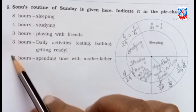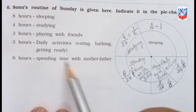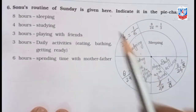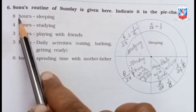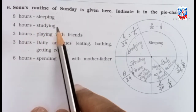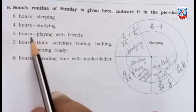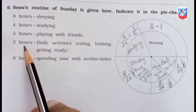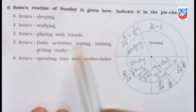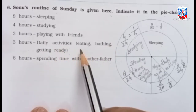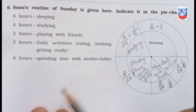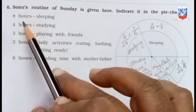This is the Sunday routine of Sonu. We have to show this in the pie chart. He gives 8 hours for sleeping, 4 hours studying, 3 hours playing with friends, 3 hours for daily activities — that means eating, bathing, getting ready — and 6 hours spending time with father and mother.